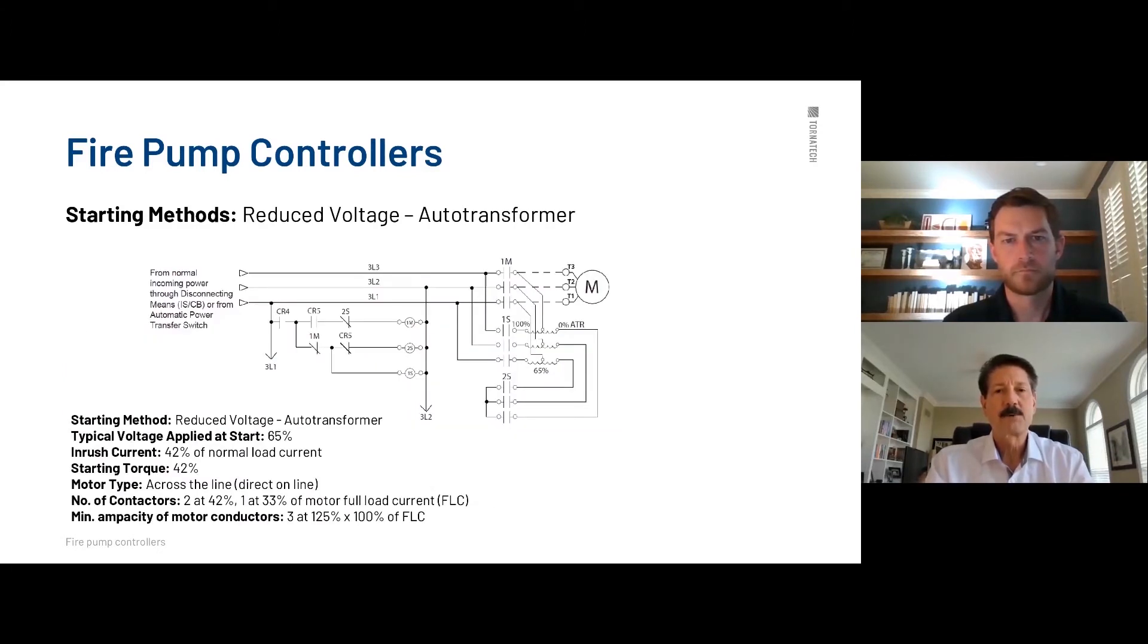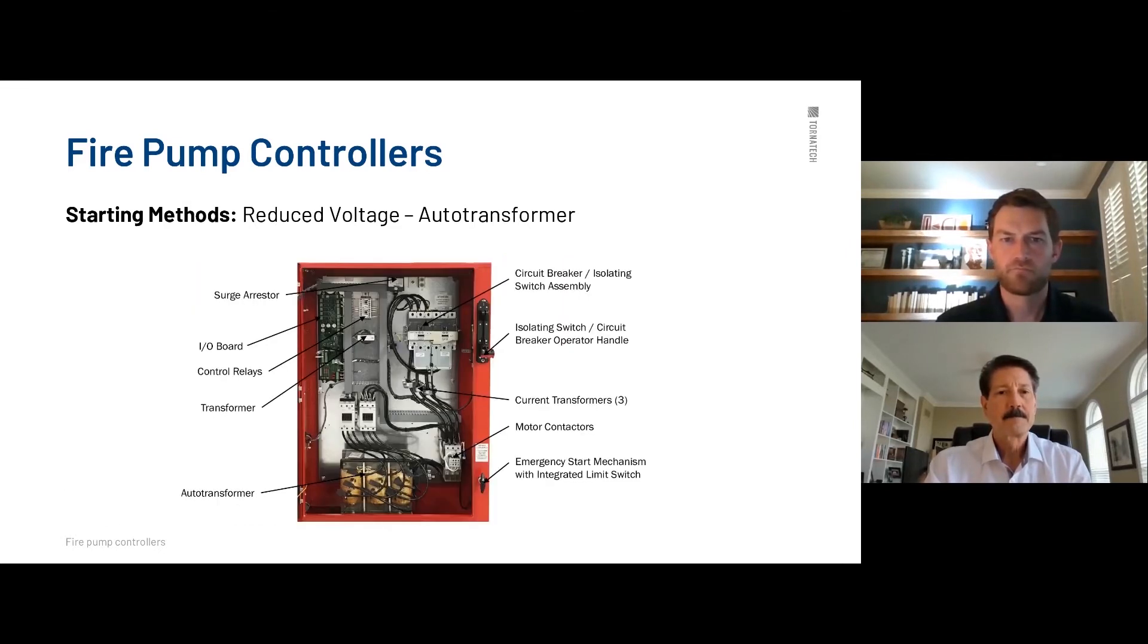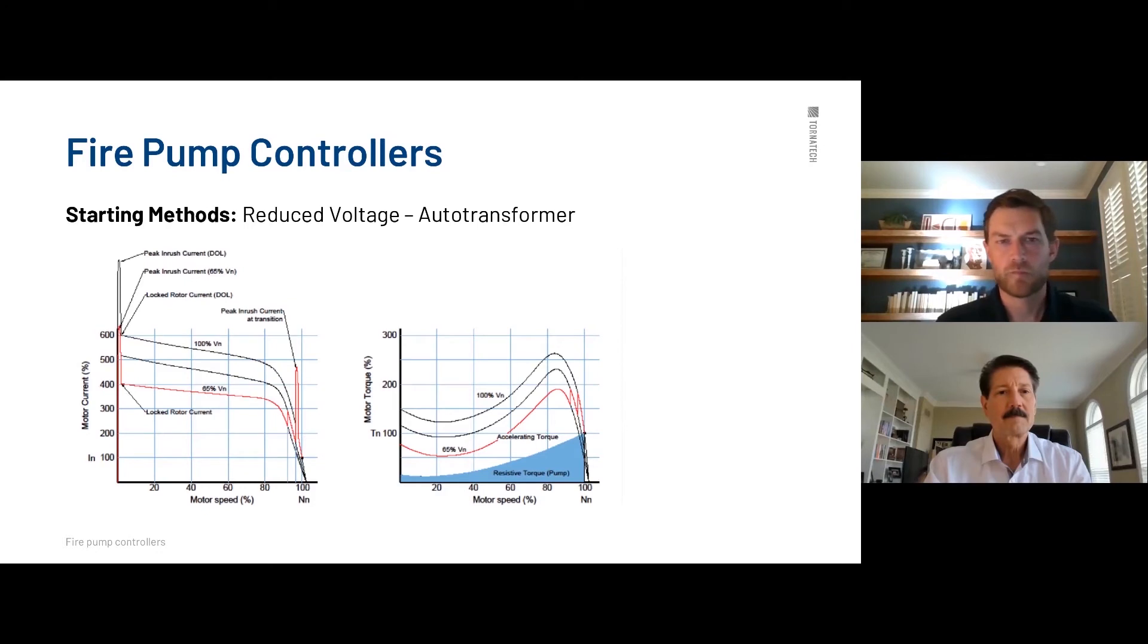Auto transformer, very brief. Again, we have a couple sets of contactors. We have taps off this transformer right here, typically 65%. There could be other adjustments factory set, but 65 is industry standard. And again, we're starting off at a reduced voltage, which is going to reduce current. And then as we ramp up, what will happen is, as you'll see briefly here, we have an inrush close to peaking three to four times full load amperage. Again, this high inrush here is almost negligible, the peak inrush.